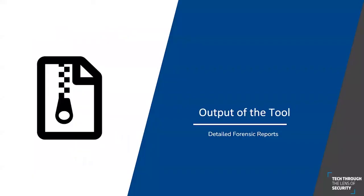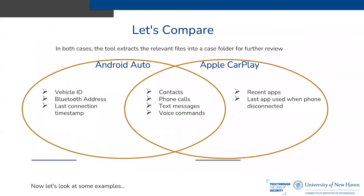The tool extracts relevant files into a case folder for further review. For both Android Auto and Apple CarPlay, the output includes contacts, phone calls, text messages, and voice commands. For Android Auto specifically, it also outputs vehicle ID, Bluetooth address, and last connection timestamp. For Apple CarPlay, it includes recent apps and the last app used when the phone disconnected from the car.